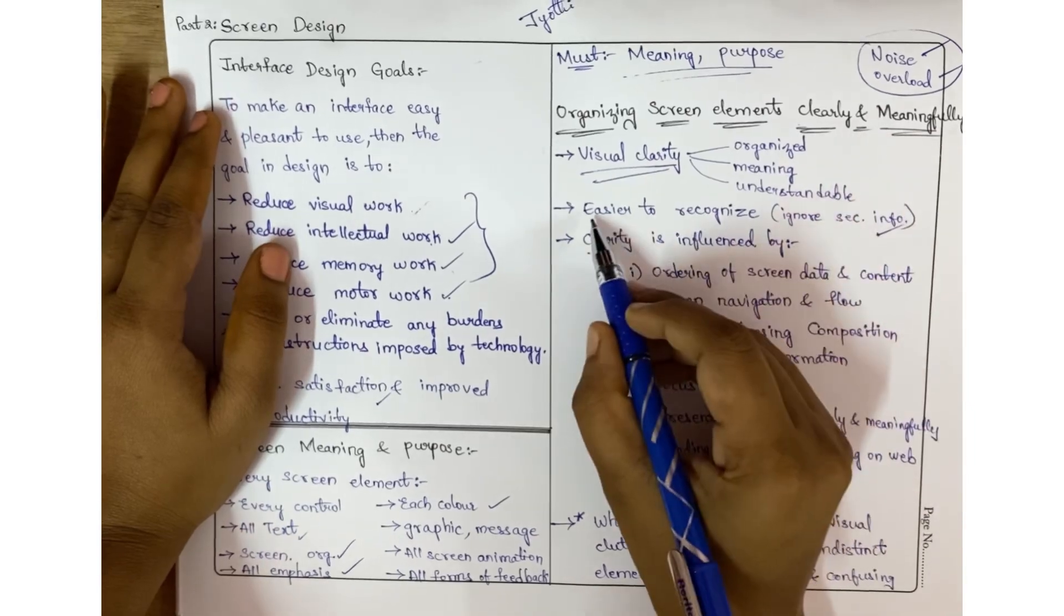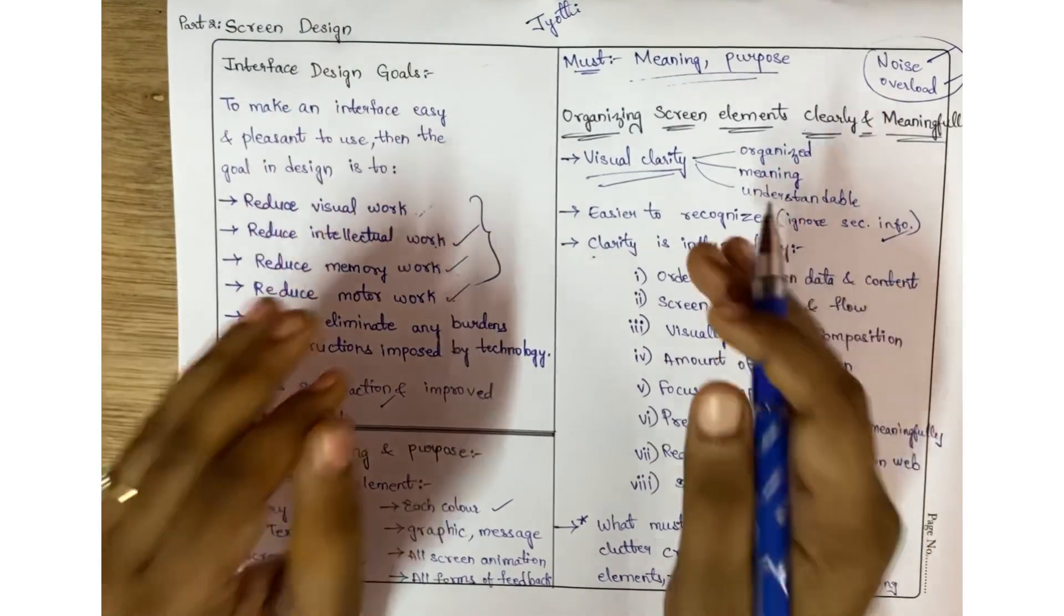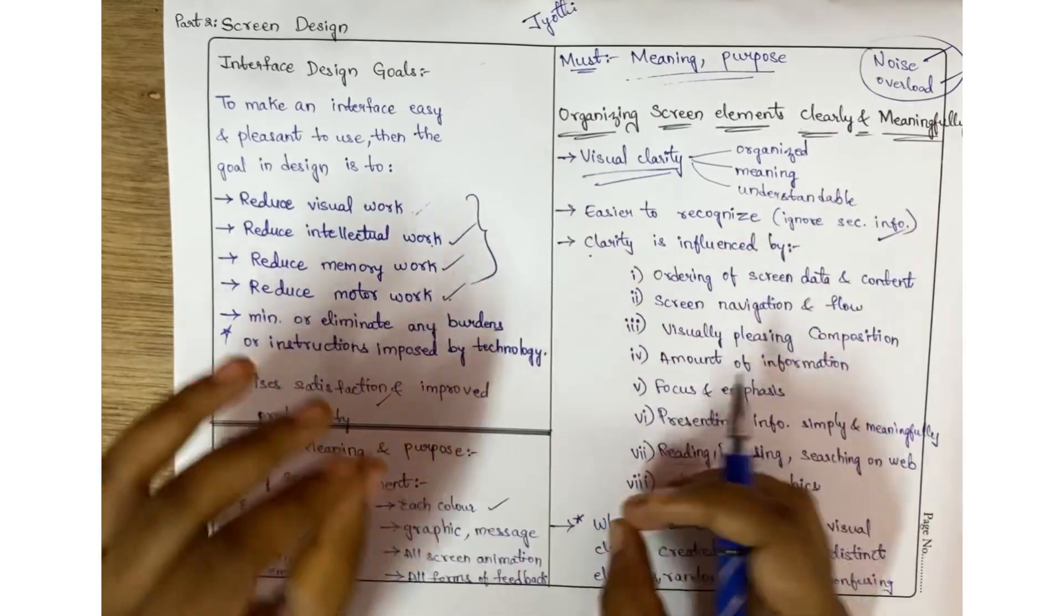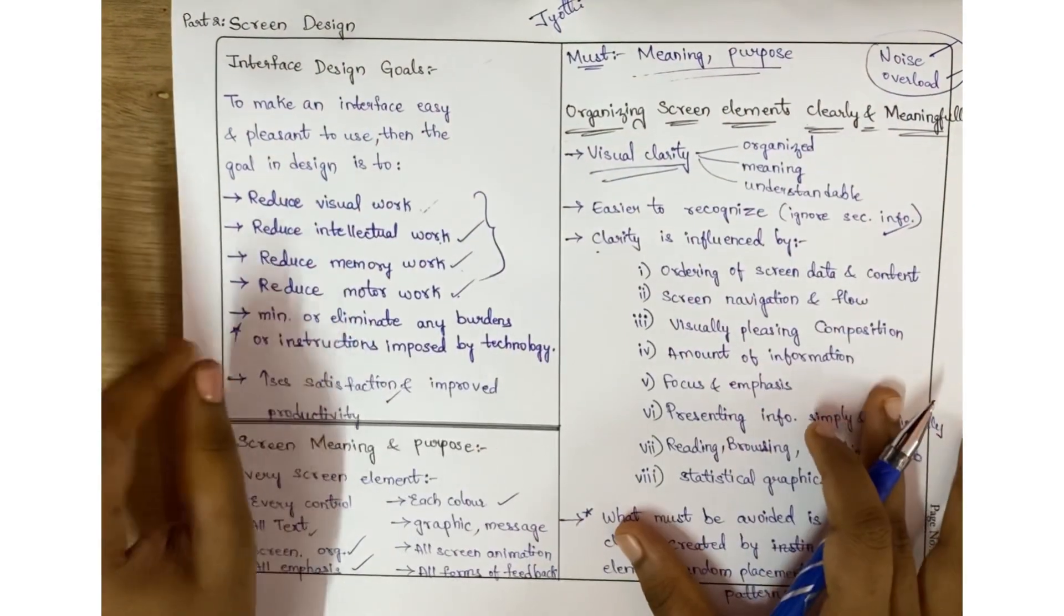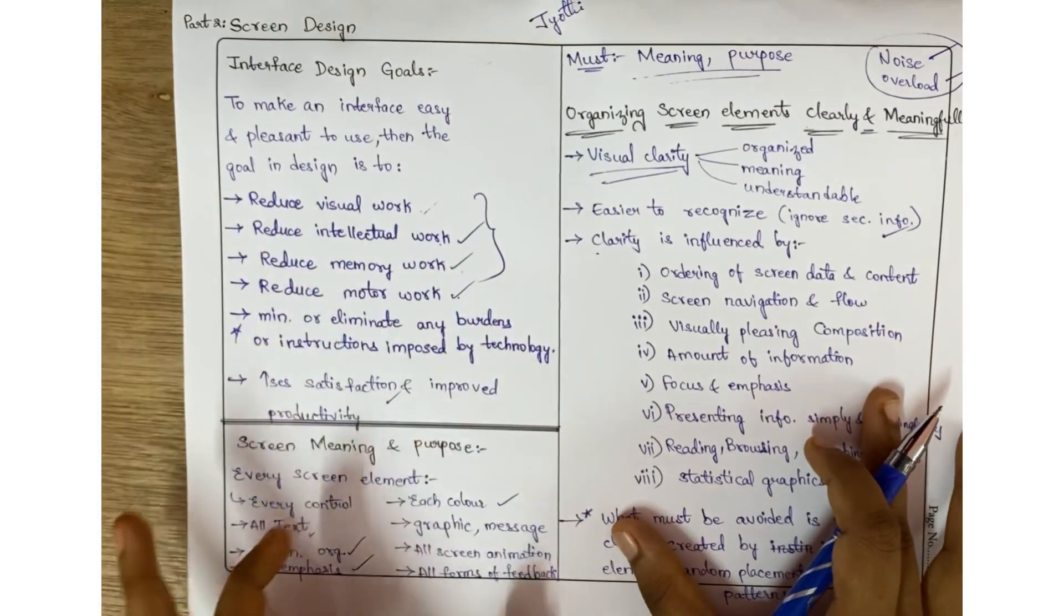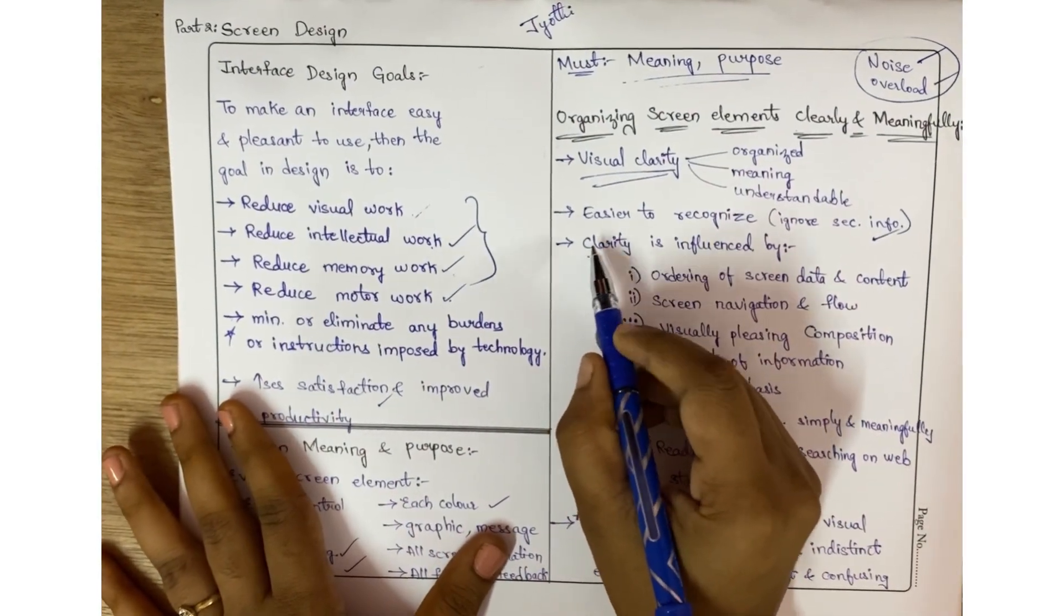The other one is that we can easily recognize things. Whatever the important content, we can easily recognize it, and secondary data might be ignored. If the organization is proper, we can directly catch the important things.